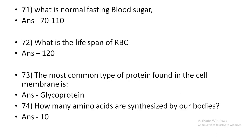What is normal fasting blood sugar? 70–110 mg/dL. What is the lifespan of RBC? 120 days. What is the most common type of protein found in the cell membrane? Glycoprotein. How many amino acids are synthesized by our bodies? 10.